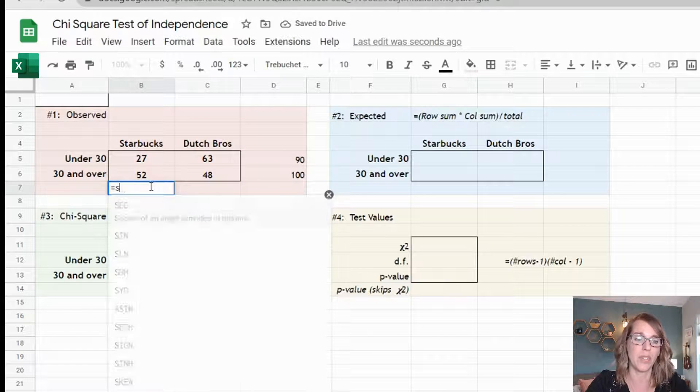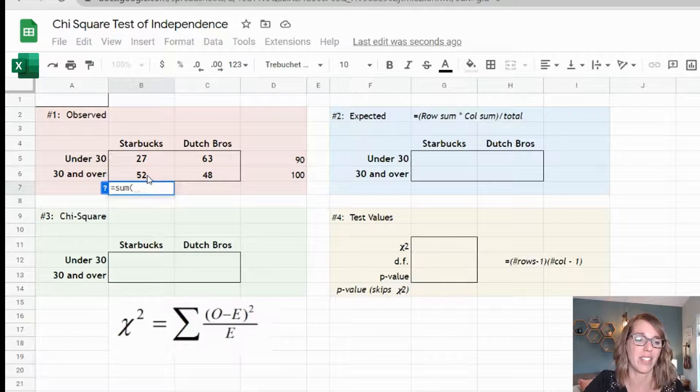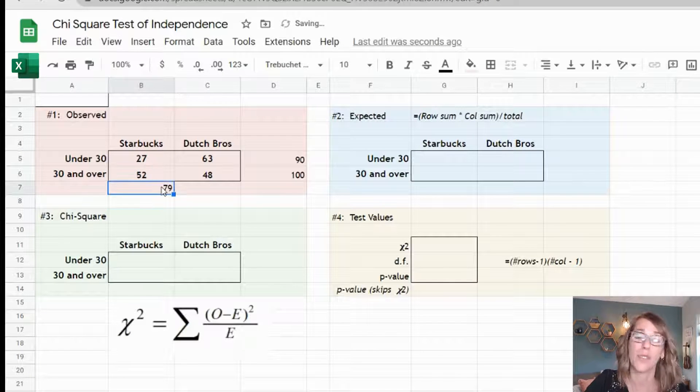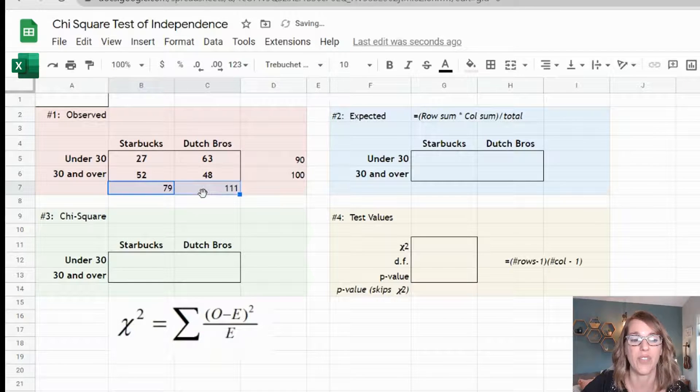Let's do this with our columns as well. So equals sum parenthesis. I'm going to click, hold and drag over those two. I'm going to click again on that sum, get that plus sign, and drag it over.